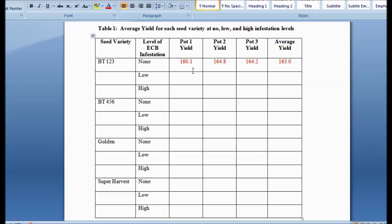And you'll see that it's entered in here. Pot one yield 160.1. And so there were all three of those pots from that no infestation. And then I put in the average. To get an average, you add all three of these and divide by three. You got your average. Then I continue to do the same with BT-low. I've grown those, so I get those weights and put them in here. This is in grams, by the way.